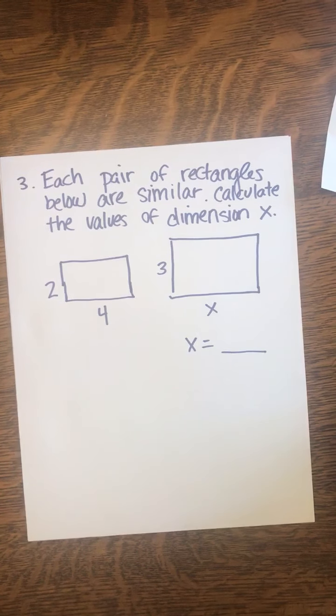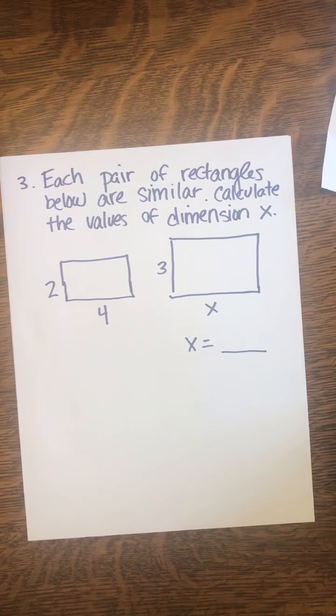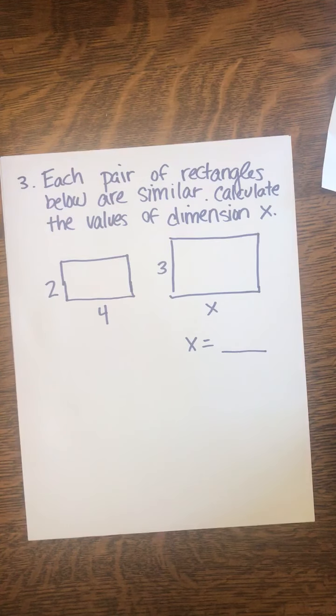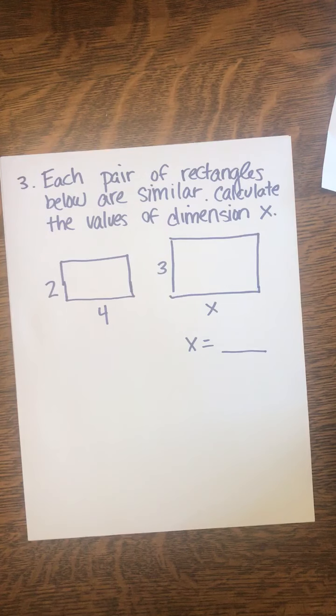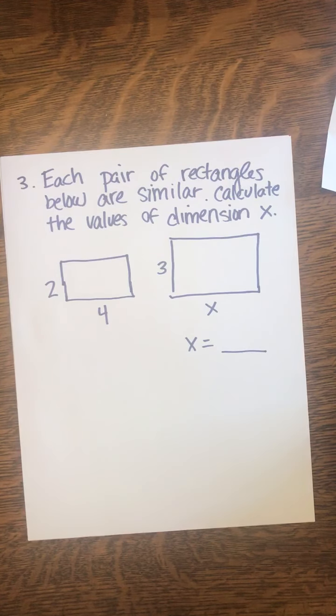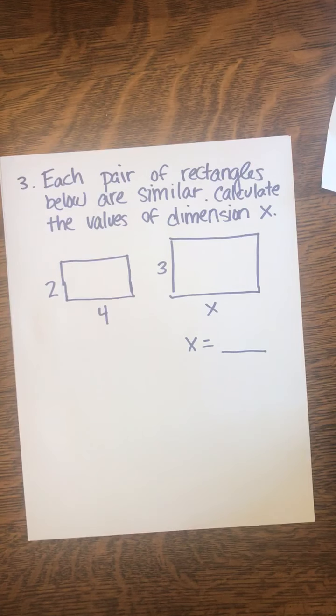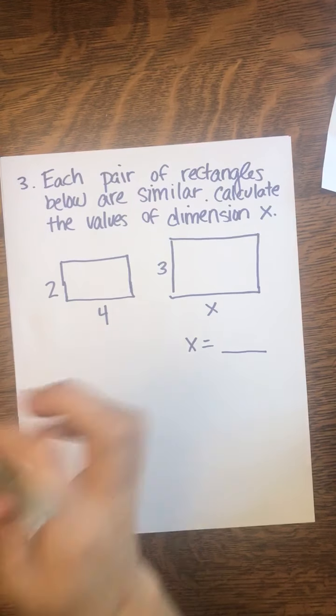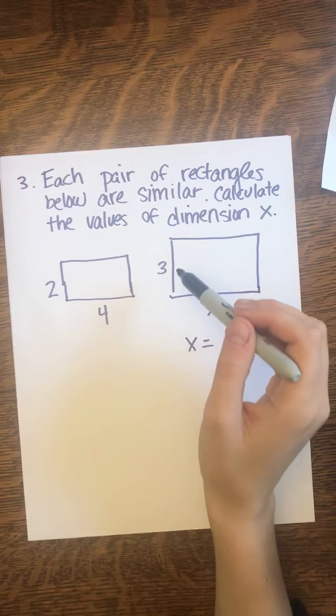Okay, so let's get started. Each pair of rectangles below are similar. Calculate the values of dimension X. Well, a similar rectangle means that it's not congruent. It does not have the same side lengths, but it has proportional side lengths. And what I mean by proportional is that the relationship between the side lengths stays the same for every side length.